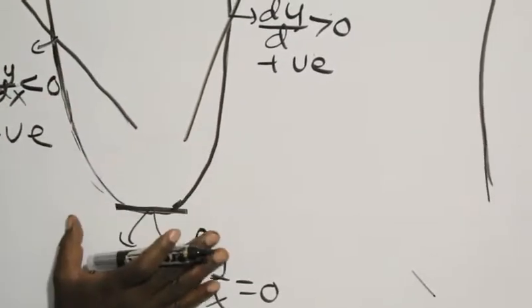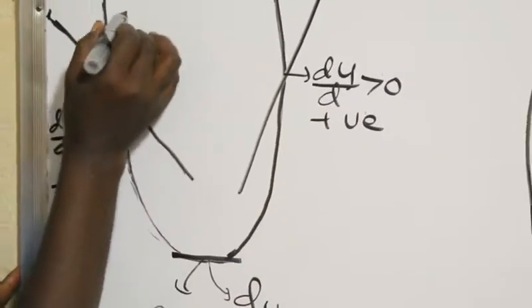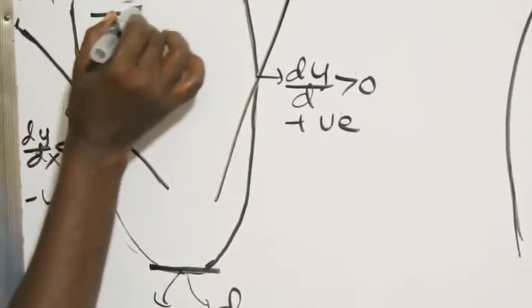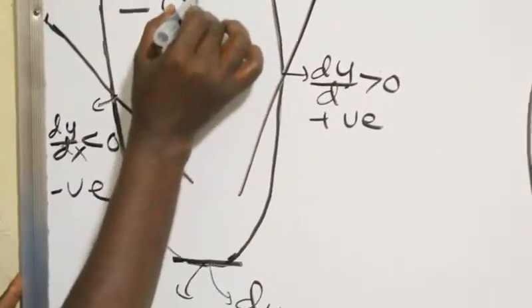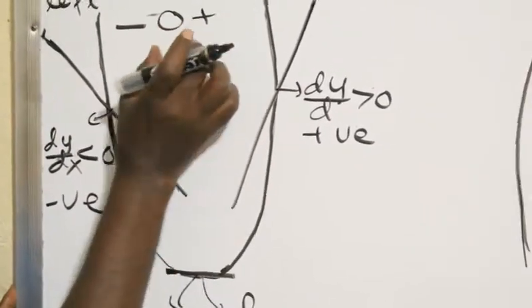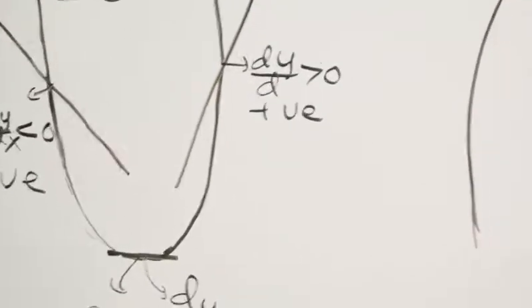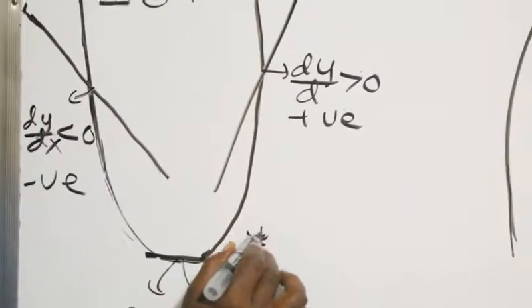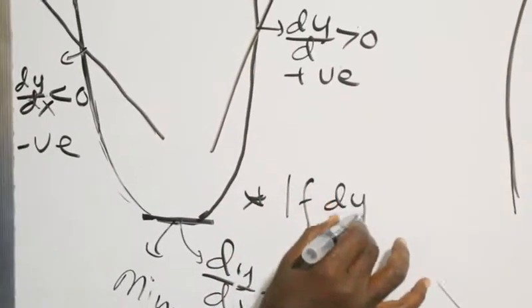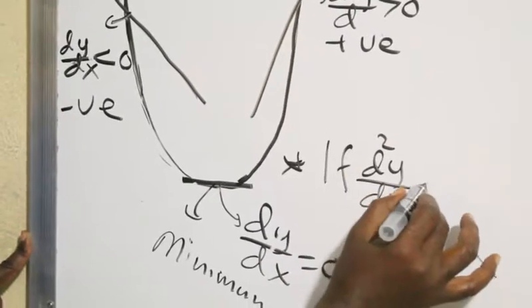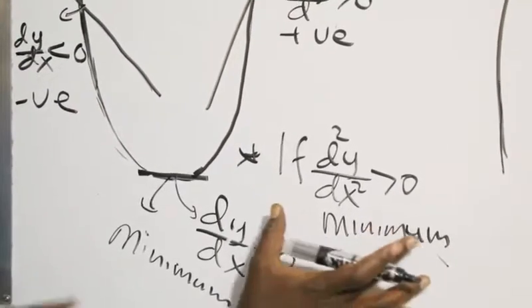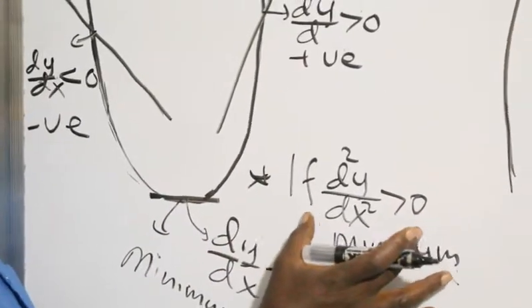If you look at the graph, you can see the minimum point. You can see the gradient going from negative to zero. To find the nature of the stationary point, we use the second derivative. If the second derivative is greater than zero, we have a minimum point.